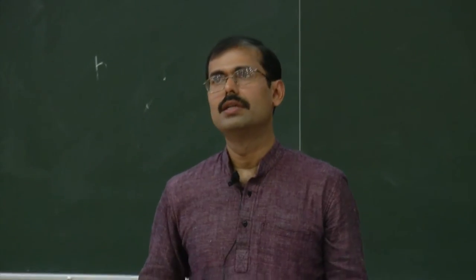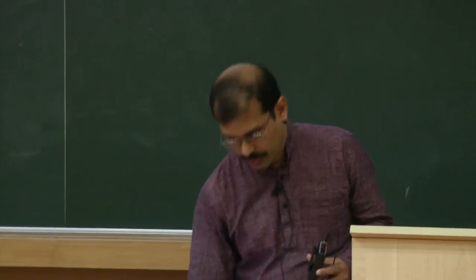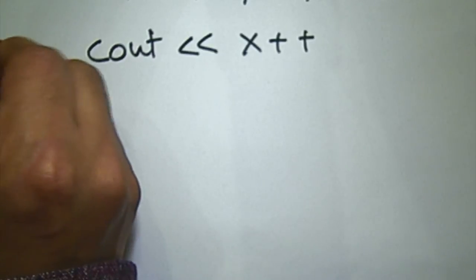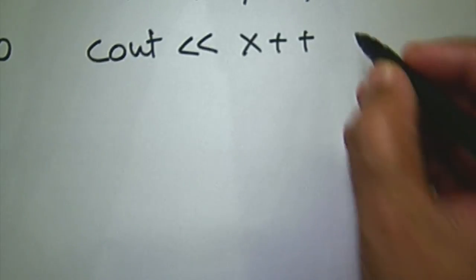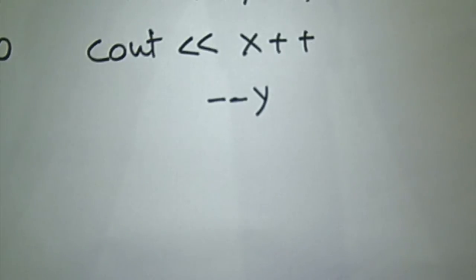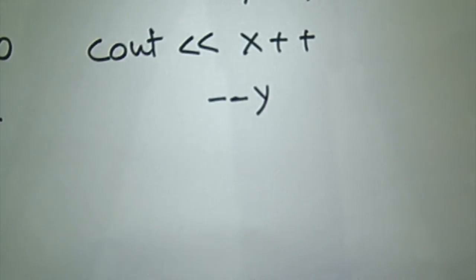It is a simpler question and in this case there is only one correct answer. What gets printed out? Student: 10. Yes — and why? Because x++ is a post-increment operator, so it will give the output as 10 first and then increment the value of x. And the next one is --y, which is a pre-decrement operator, so it will first decrease the value of y by 1 and then give the output.